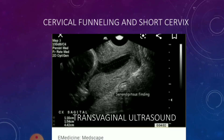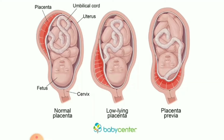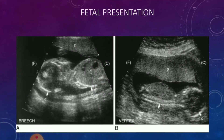Secondly, you want to see the placental lie — see whether it's previa, posterior, fundal, low-lying, or marginal. You also want to see the presentation of the baby, whether it's vertex or cephalic, breech, transverse, or one of those variations.